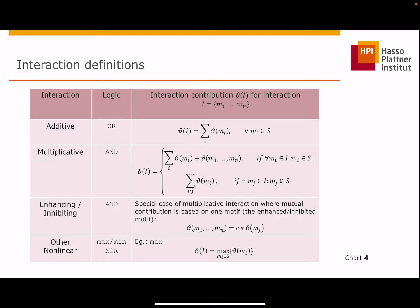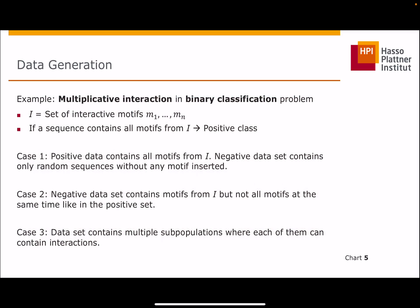There are also other possible interactions which could occur. For example, enhancing or inhibiting interactions, which are a special case of multiplicative interactions. Here, the mutual contribution is only based on the enhanced or inhibited motive's contribution, but would not count if the other motives aren't present.